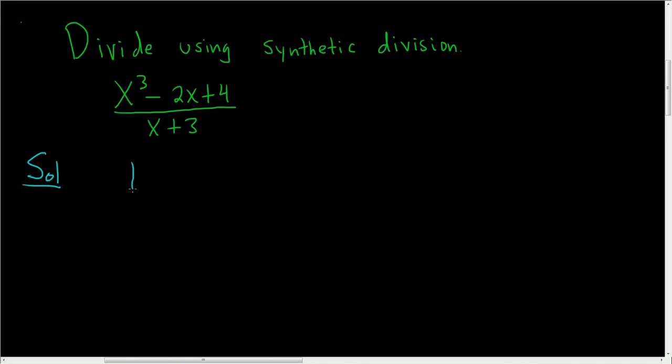So the first thing you want to do is draw a funny little bracket like this. And if there's a plus 3 here, you put a minus 3 here. So you just switch the sign. If it was x minus 3, instead you would put a plus 3 here. But it's x plus 3, so we put a minus 3.